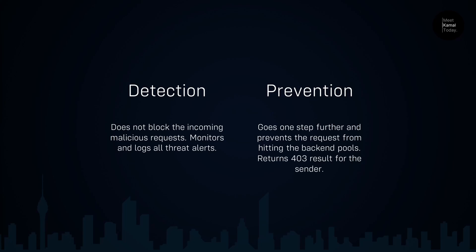When you configure WAF, you have two options: detection or prevention. When you enable detection, web application firewall does not block the malicious request — it just logs the information and metrics about the request and allows it to reach your backends. When you enable prevention, web application firewall will block the request and return a 403 HTTP response to the malicious user.